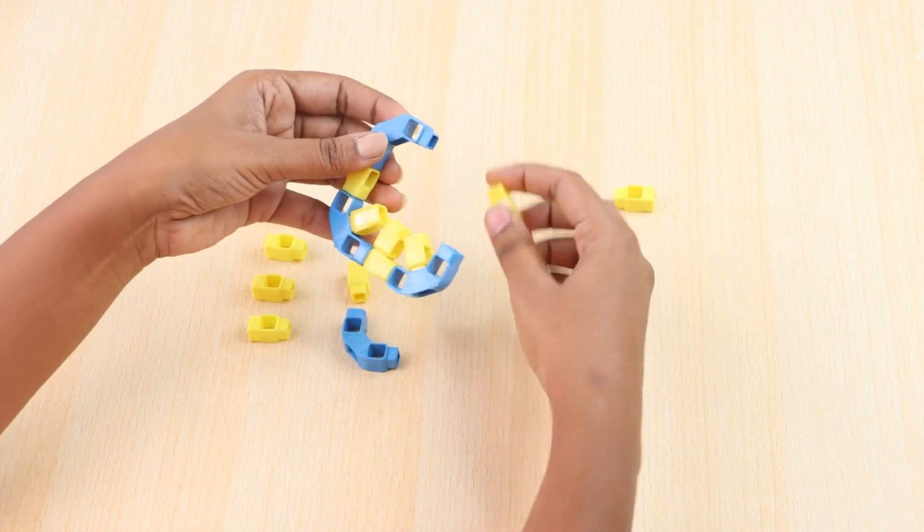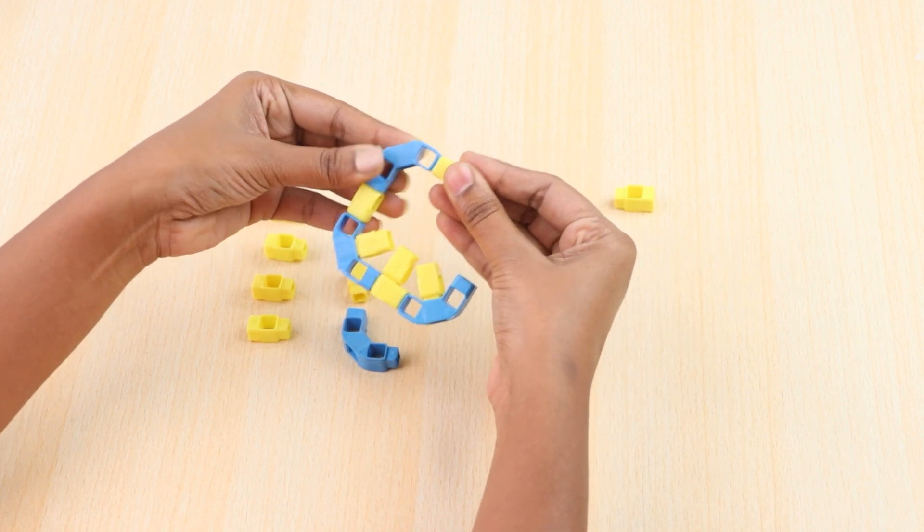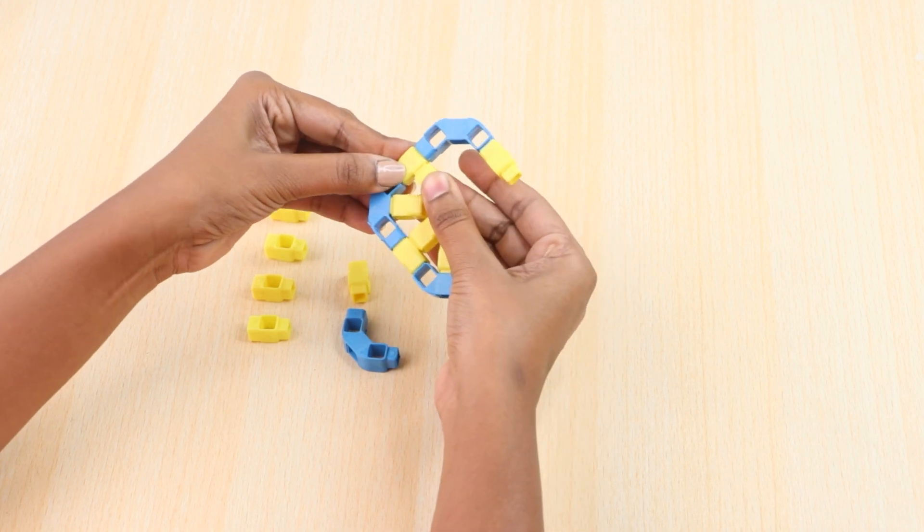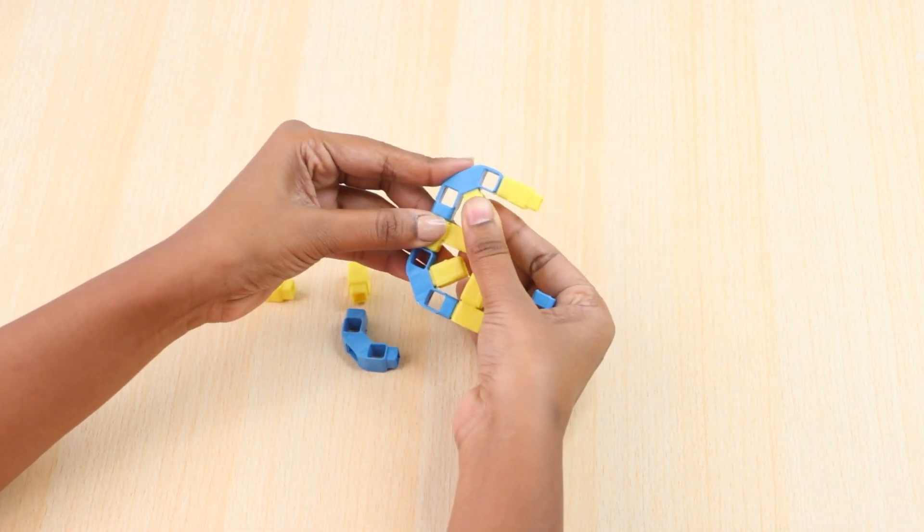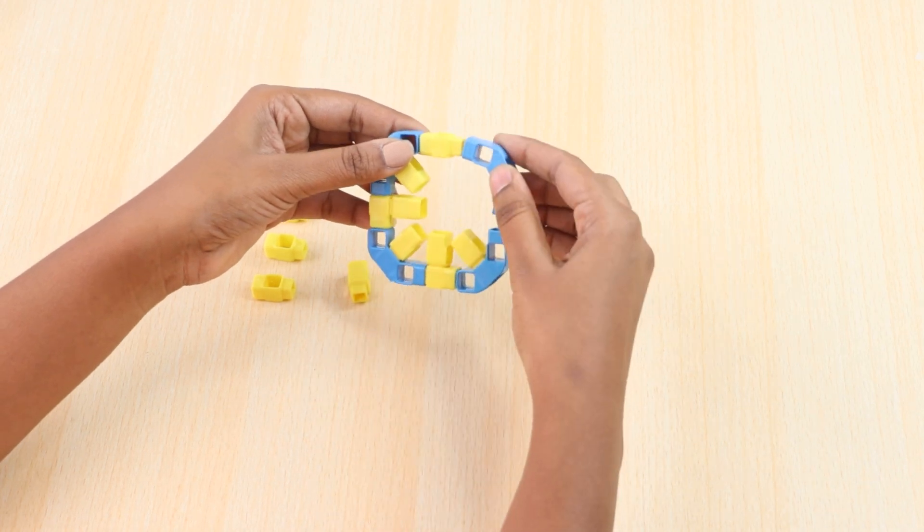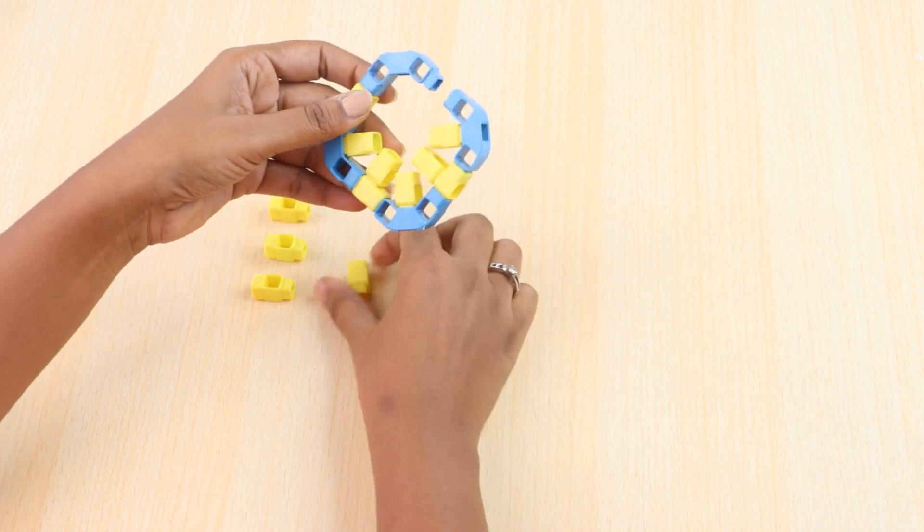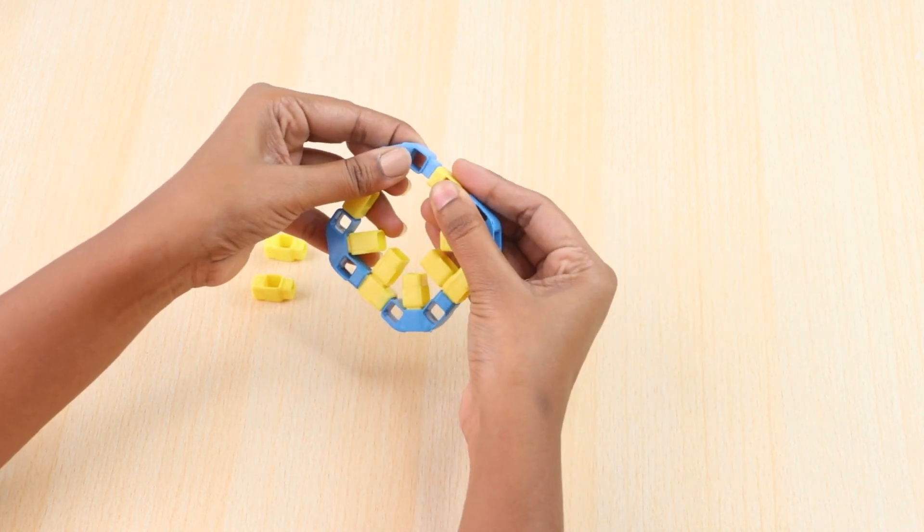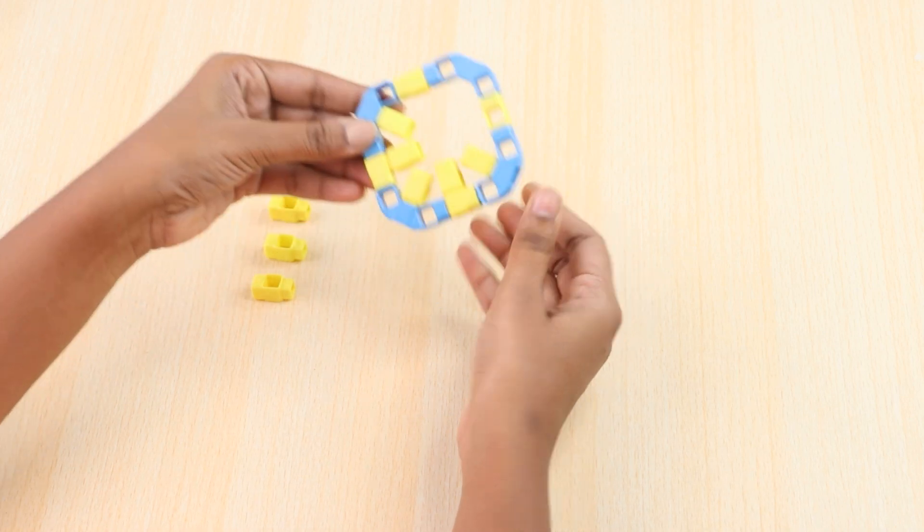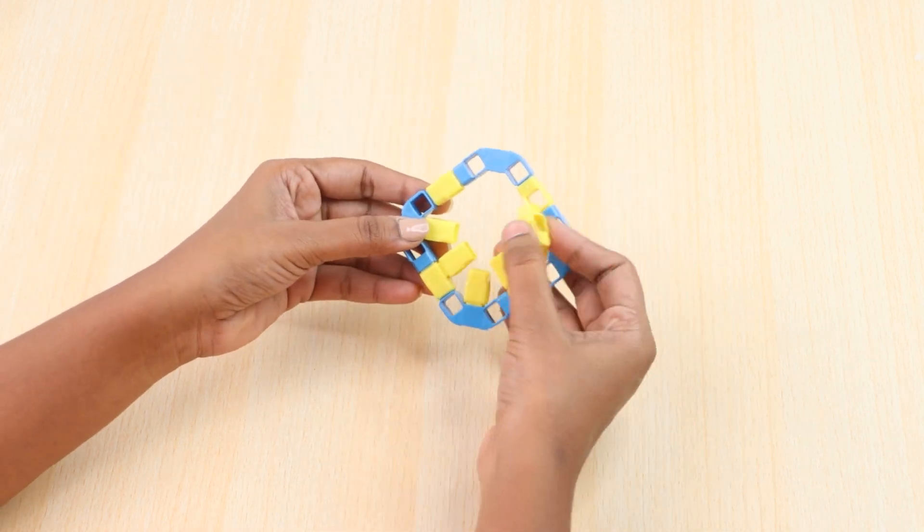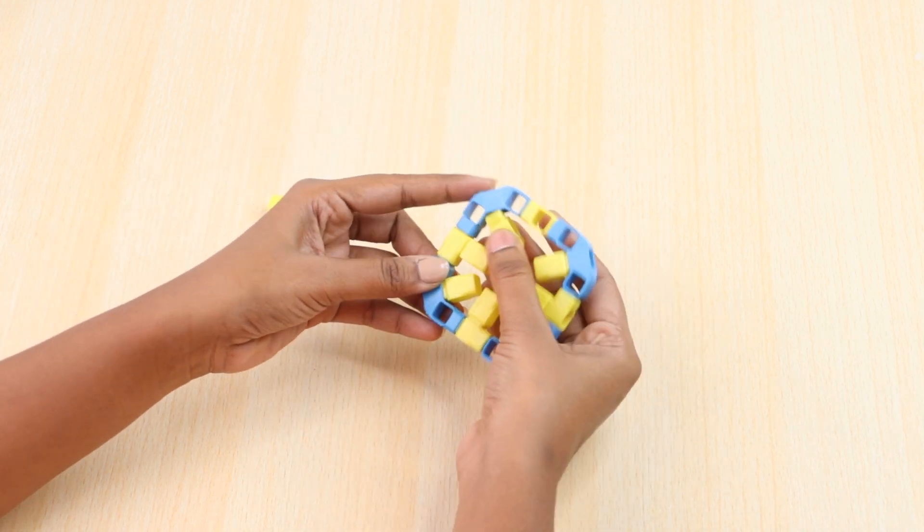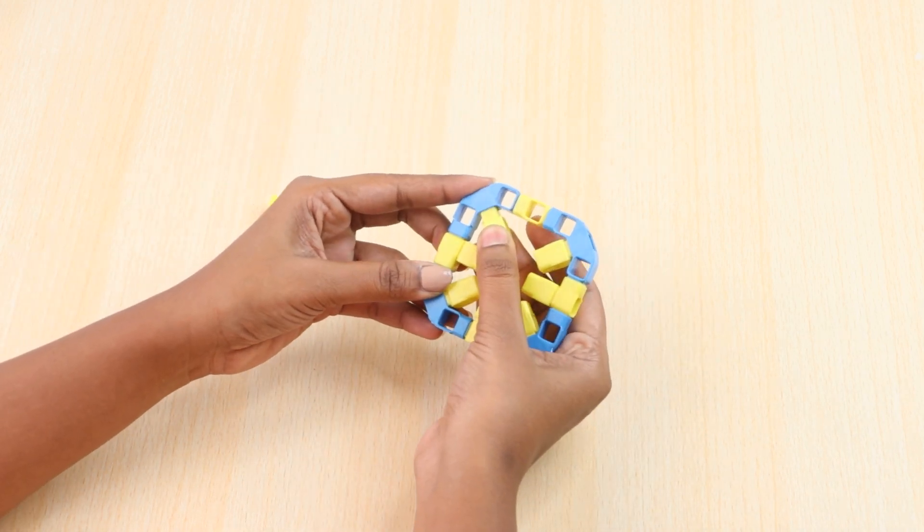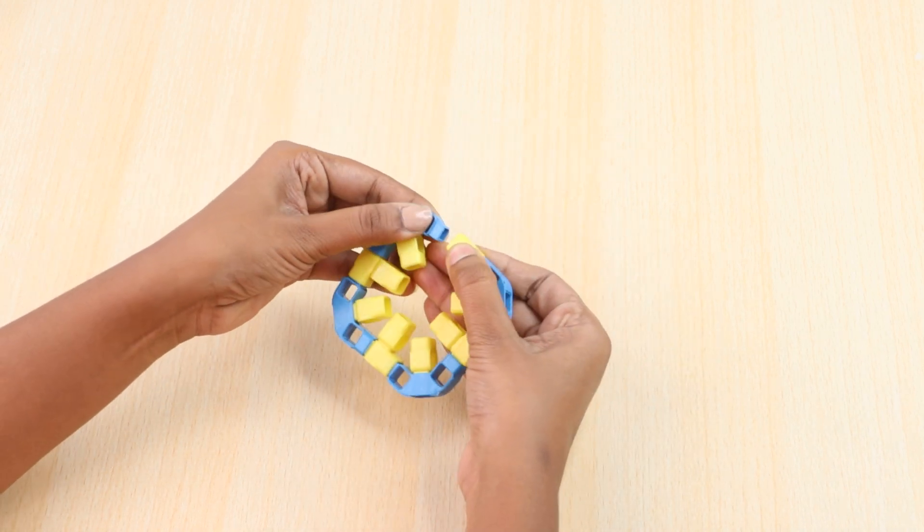First take 4 three-hole, 12 one-hole beams and join them as shown.